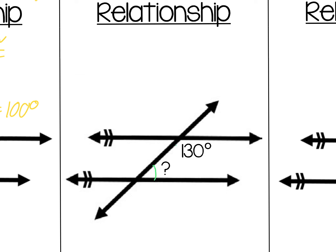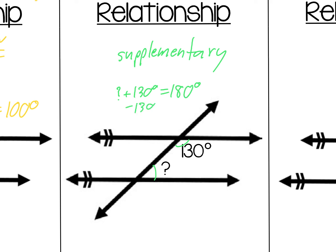Looking at the example, the mystery angle and 130 degrees are same side interior angles. Notice how the mystery angle is the acute angle, smaller than 90 degrees, and the other is the obtuse angle. That means they will not be congruent — they will actually be supplementary, meaning they add up to 180 degrees. So the mystery angle plus 130 degrees equals 180 degrees. Subtracting 130 from both sides, the mystery angle is 50 degrees.